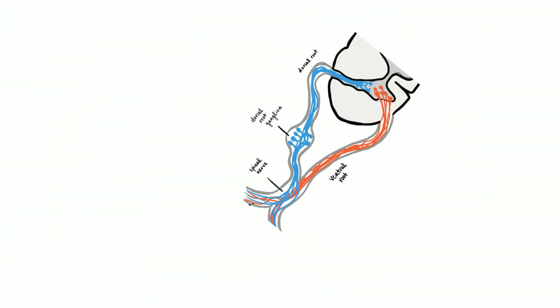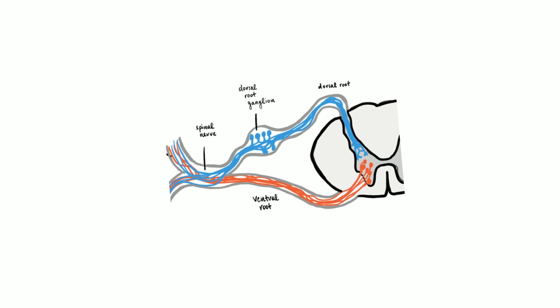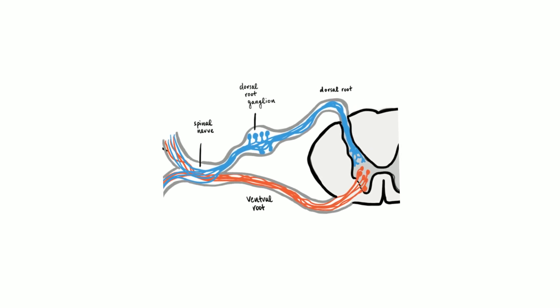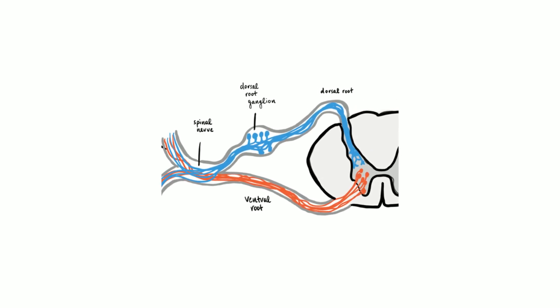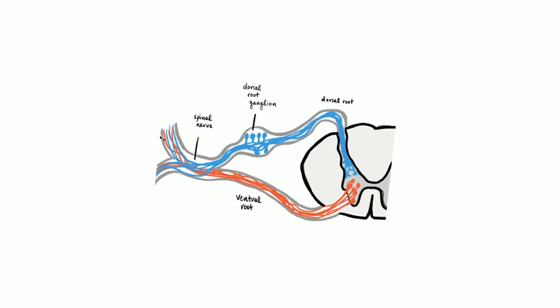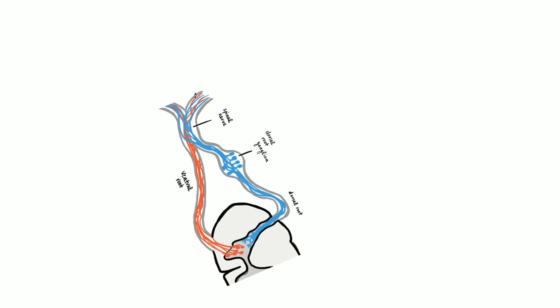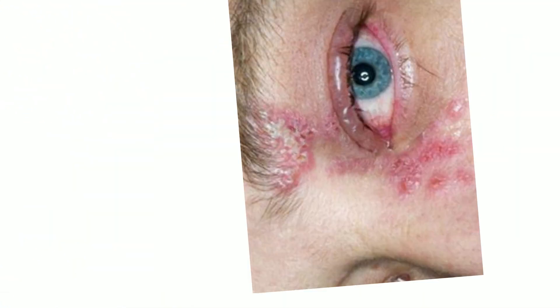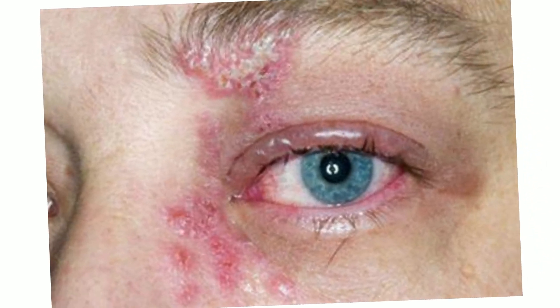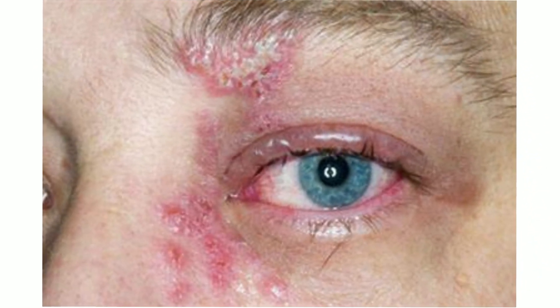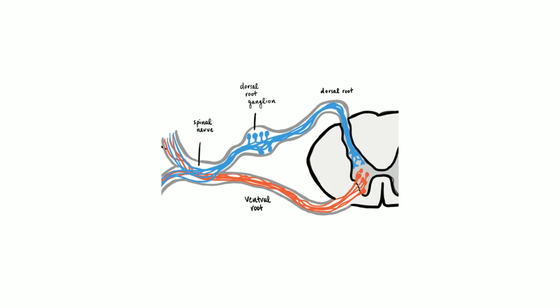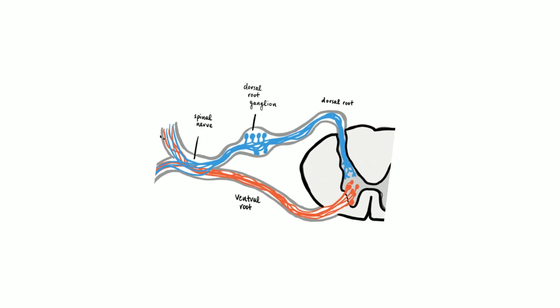The most common complication of herpes zoster is post-herpetic neuralgia, which is a pain that persists in the area where the rash once was for more than 3 months after rash onset. This condition could last for months or even years. Other less common complications include ophthalmic involvement, bacterial super-infection of the lesions, cranial and peripheral nerve palsies, and visceral involvement.